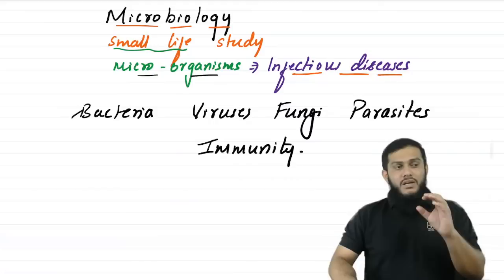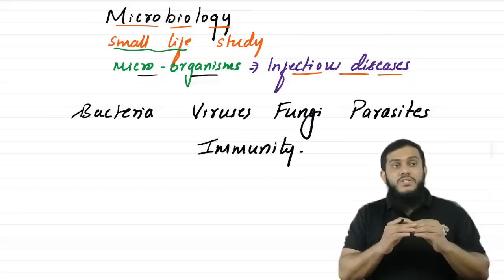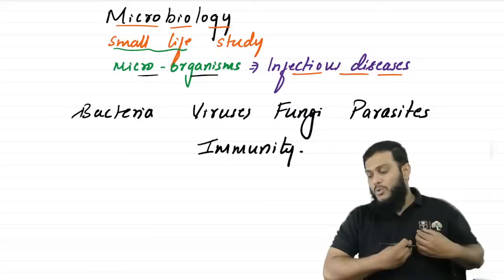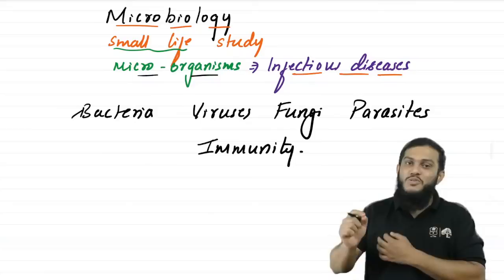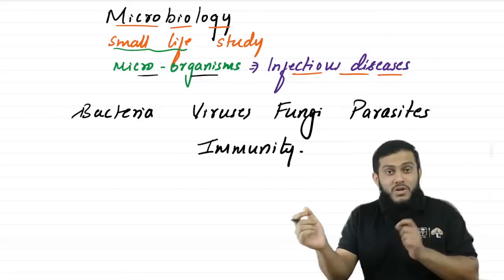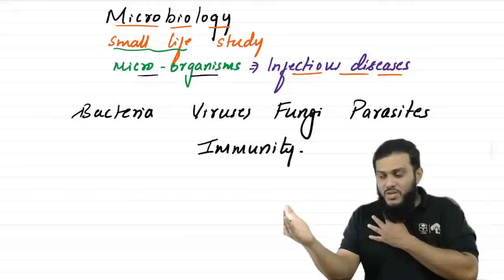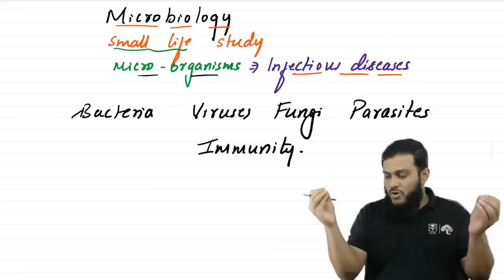The content is the same — microbiology is microbiology. Only the pattern has changed. Earlier we studied an organism, for example staphylococcus — the various infections it causes and how to identify it. Now in the CBME pattern, we study staphylococcus in the CNS because it causes brain abscess, in cardiovascular because it causes infective endocarditis, in respiratory because it causes nosocomial pneumonia, in gastrointestinal because it causes gastroenteritis, in urinary because it causes urinary tract infection, in musculoskeletal because it causes osteomyelitis.